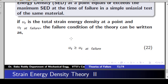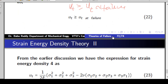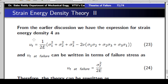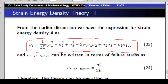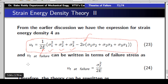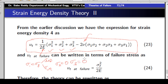According to this theory, failure occurs when the total strain energy density equals or exceeds the total strain energy density at failure in a simple tensile test. We already derived an expression for total strain energy density in earlier discussions, written in terms of three principal stresses sigma 1, sigma 2, and sigma 3, with nu as Poisson's ratio and E as Young's modulus. We compare this with strain energy density at failure: in the UTM machine at failure, sigma 1 equals sigma_failure (yield point or ultimate stress), and sigma 2 = sigma 3 = 0. Substituting gives an expression for U_T at failure.